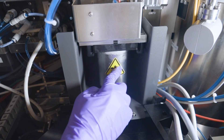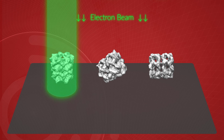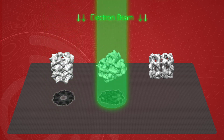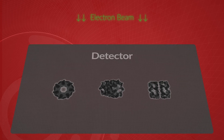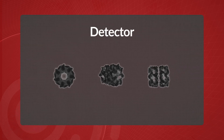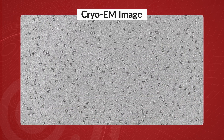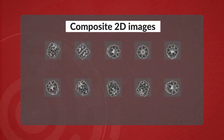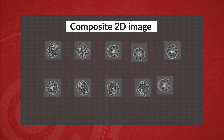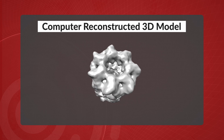Once it's frozen, the sample gets placed into the microscope vacuum chamber. This is where the microscope shoots an electron beam at the mesh. Since the molecules are all in different random orientations, each one leaves a unique 2D image of its shadow on the detector. Scientists will take a bunch of these 2D images, and then a computer selects the images that are similar to combine them and produce an even more detailed composite image. Eventually, they get enough images to computationally render a 3D version of the molecule.